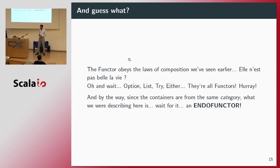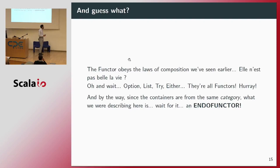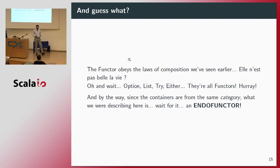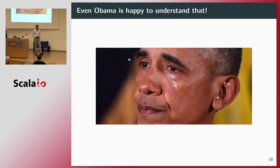The functor obeys the laws of composition that we have seen earlier. For the record: Option, Try, Either, List — they are all functors. And since the containers are from the same category, what we are describing here is what we call another scary keyword: endofunctors. So usually when we work with Scala, we work with endofunctors.